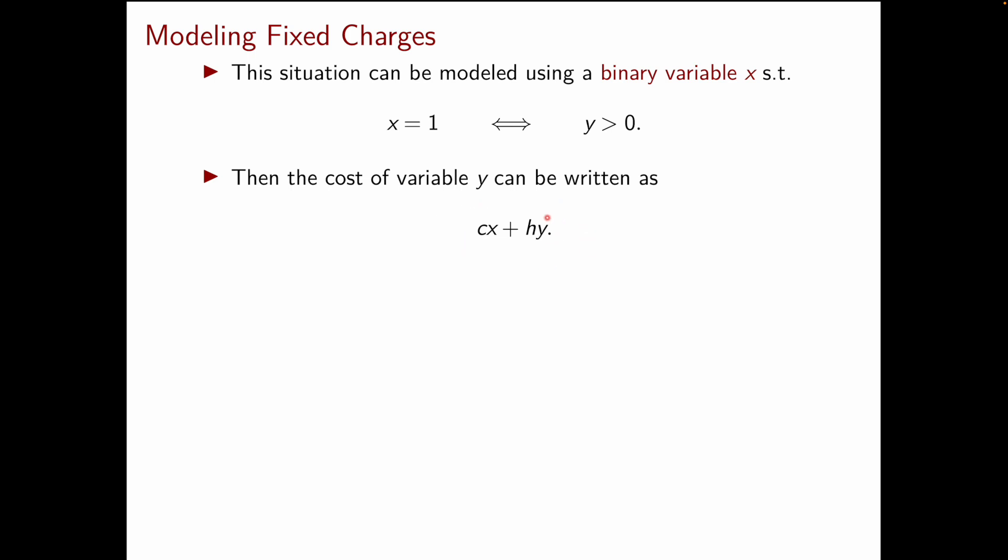In fact if y is equal to zero then hy is equal to zero and because of the if and only if we have x equal to zero and so also cx will be equal to zero. So the total production cost will be zero as expected.